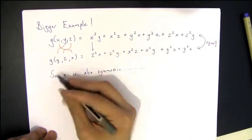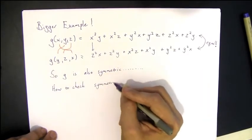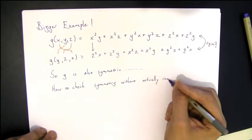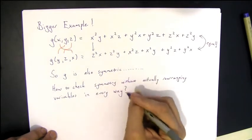Therefore, g is also symmetric. So an interesting question here is how do you go about checking symmetry without actually doing all of the many, many ways of rearranging the variables?